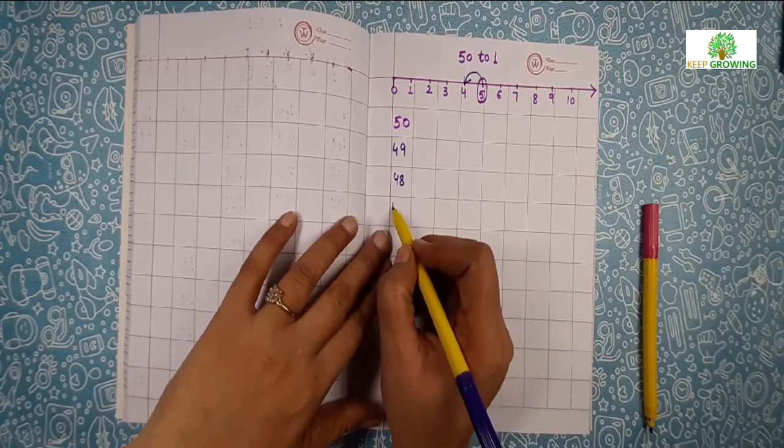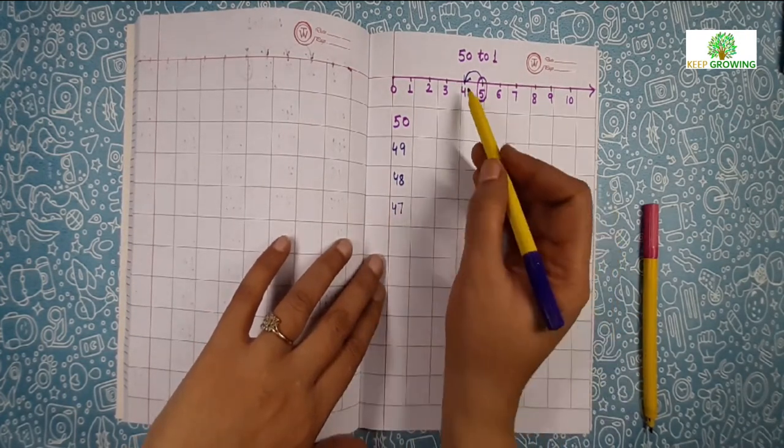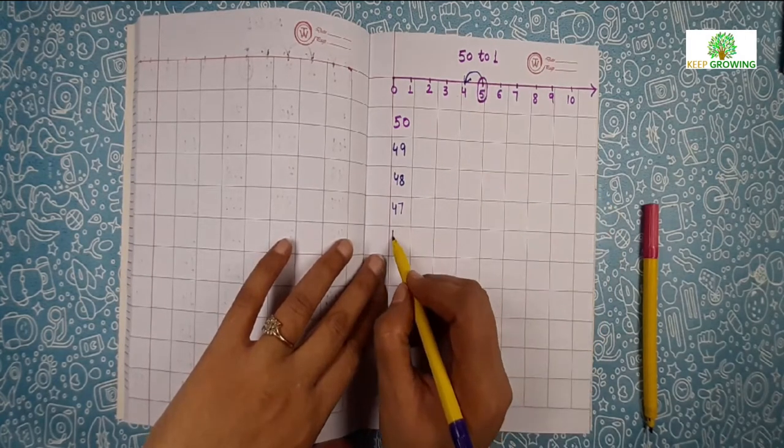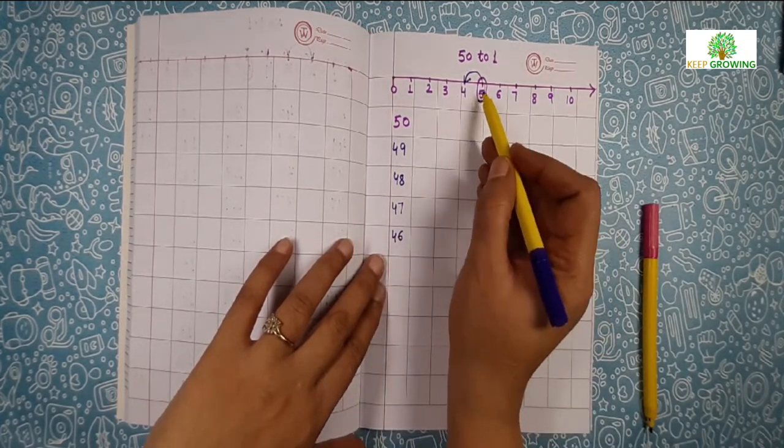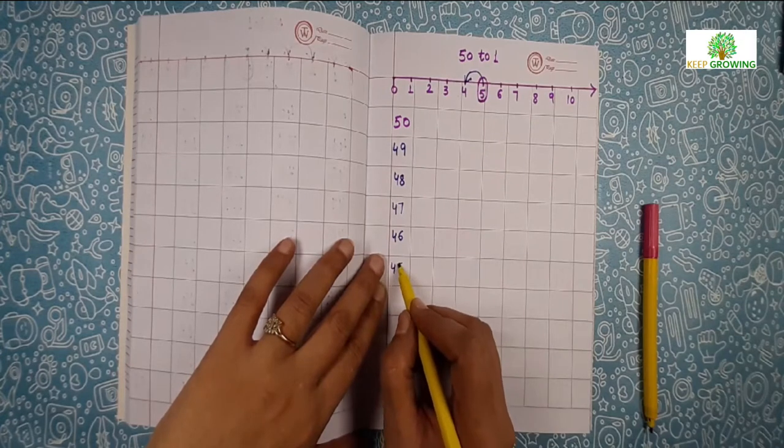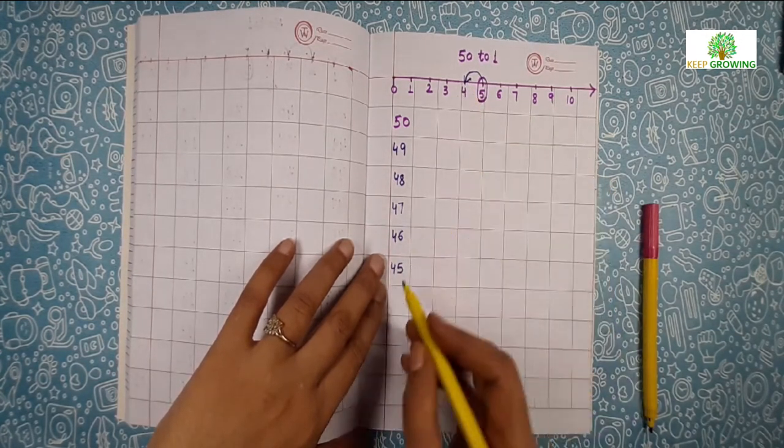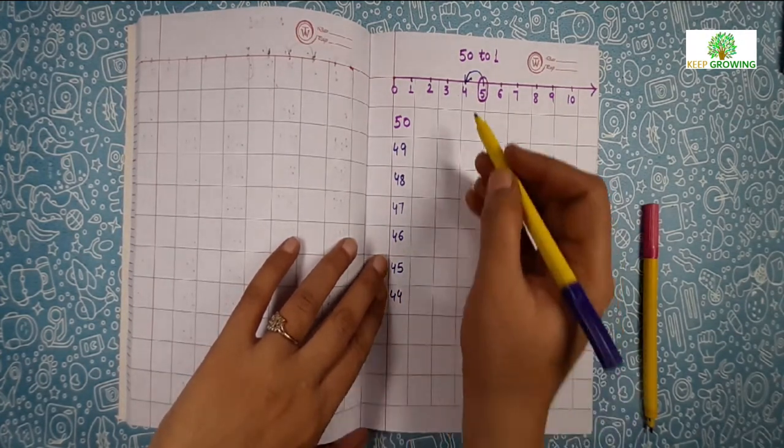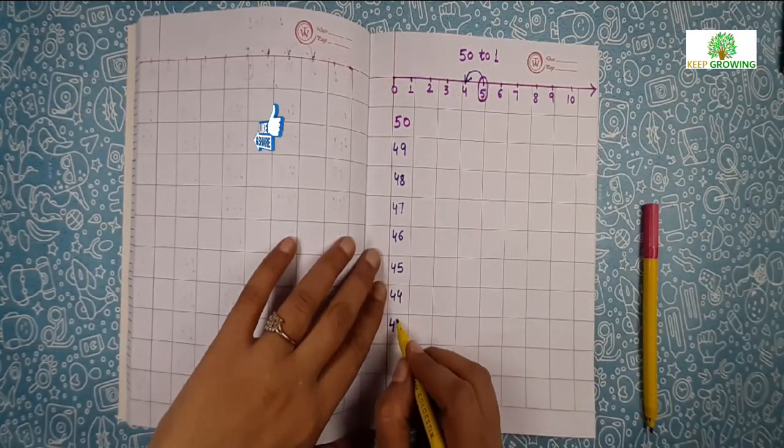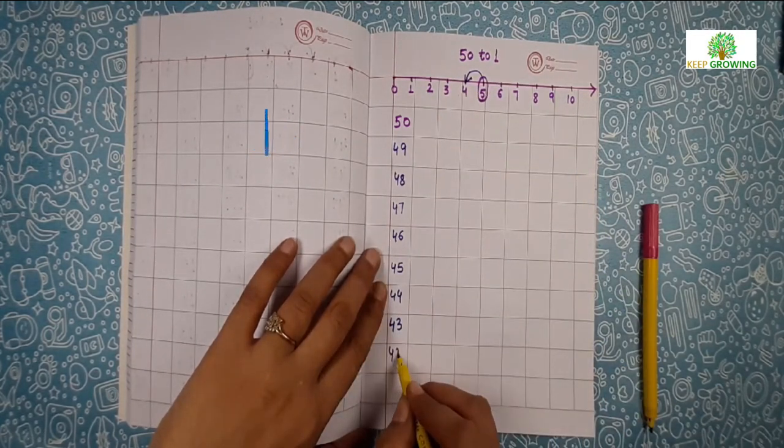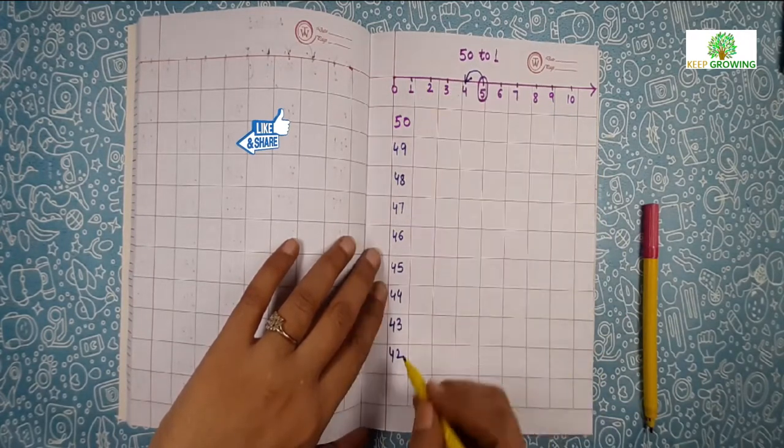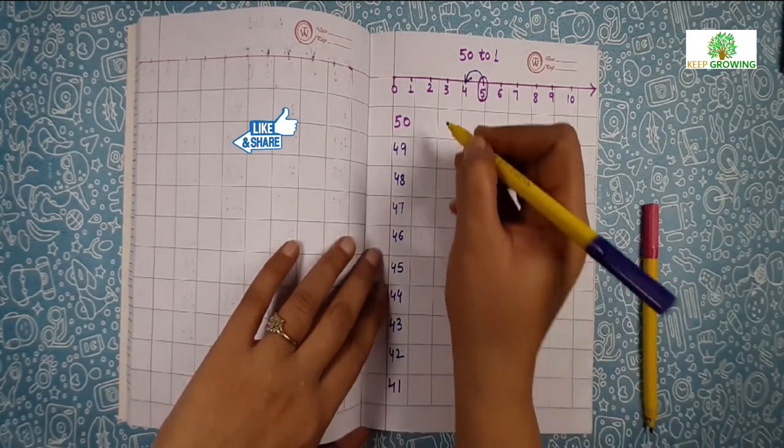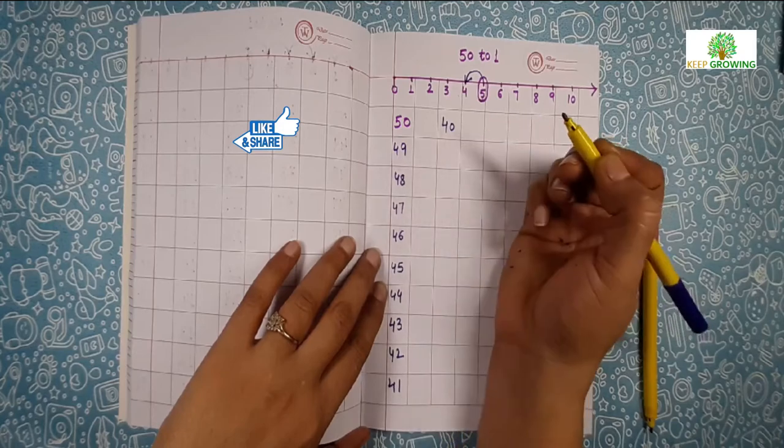4, 7, 47. 4, 6, 46. 4, 5, 45. 4, 4, 44. 4, 3, 43. 4, 2, 42. 4, 1, 41. 4, 0, 40.